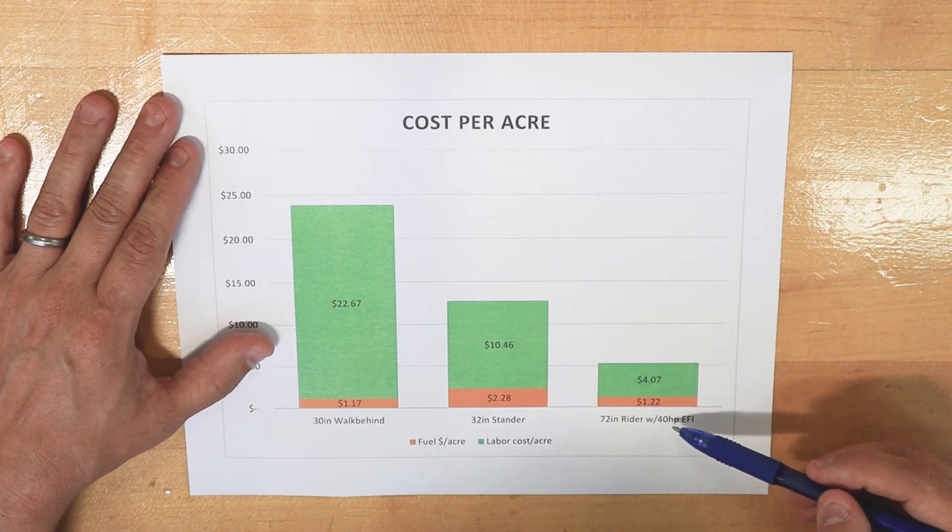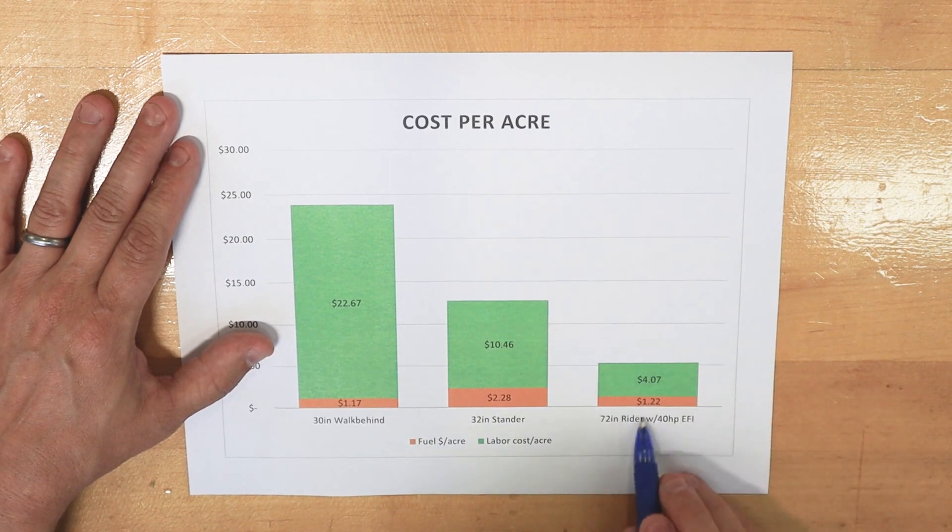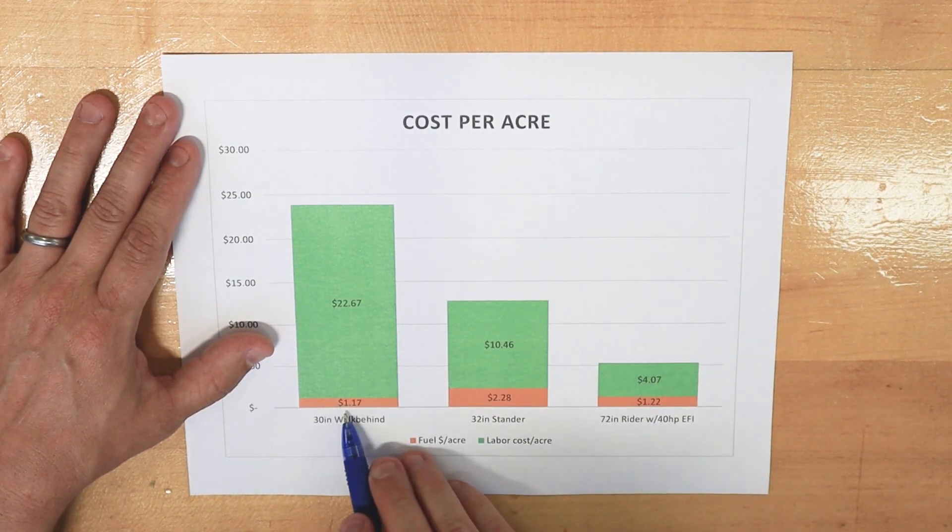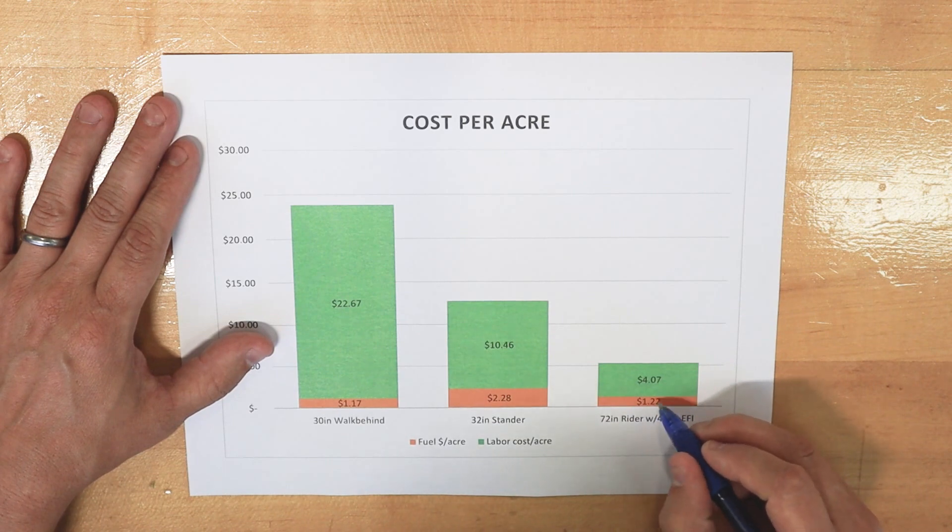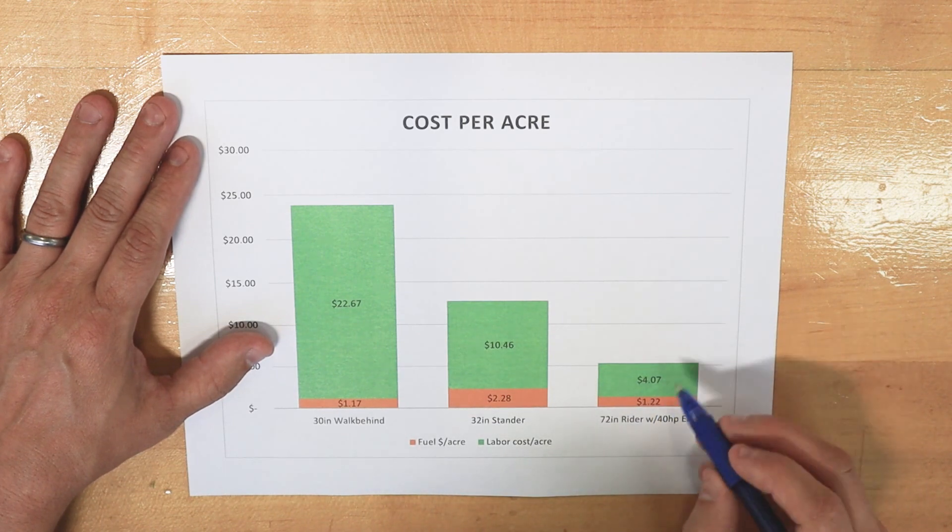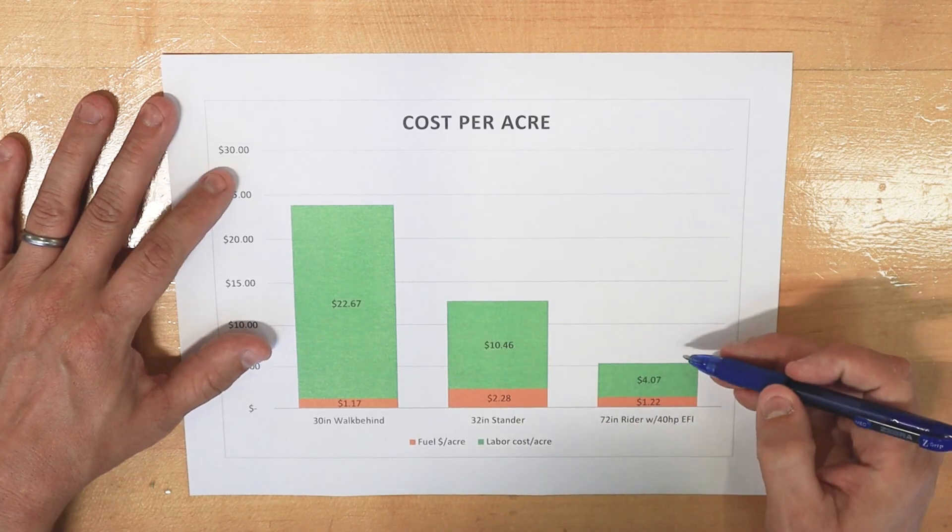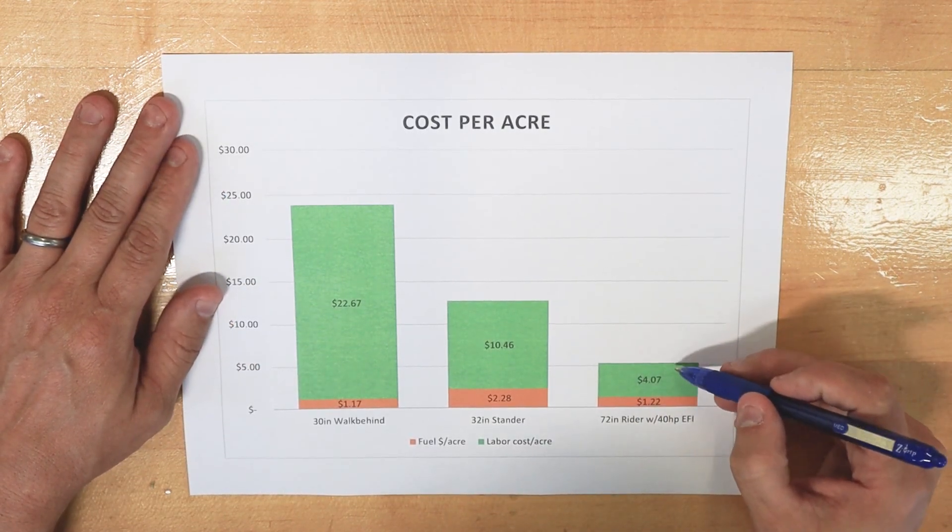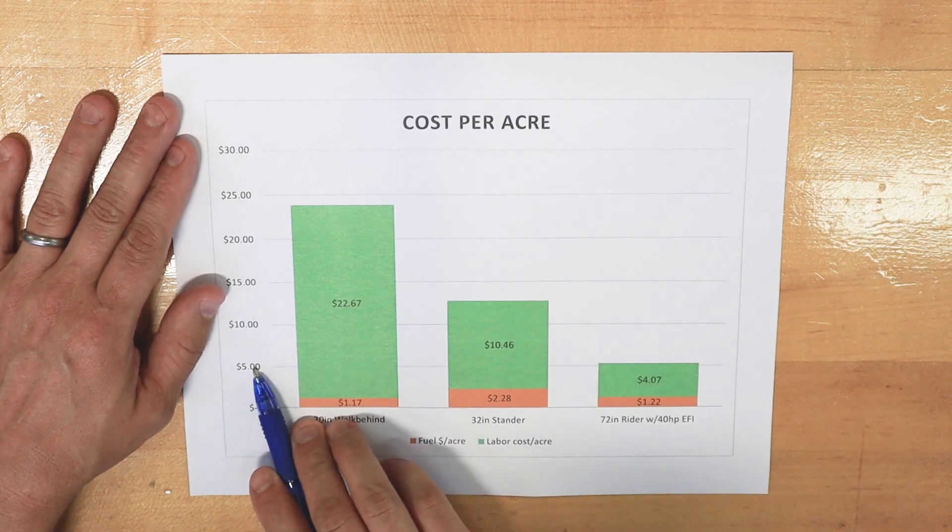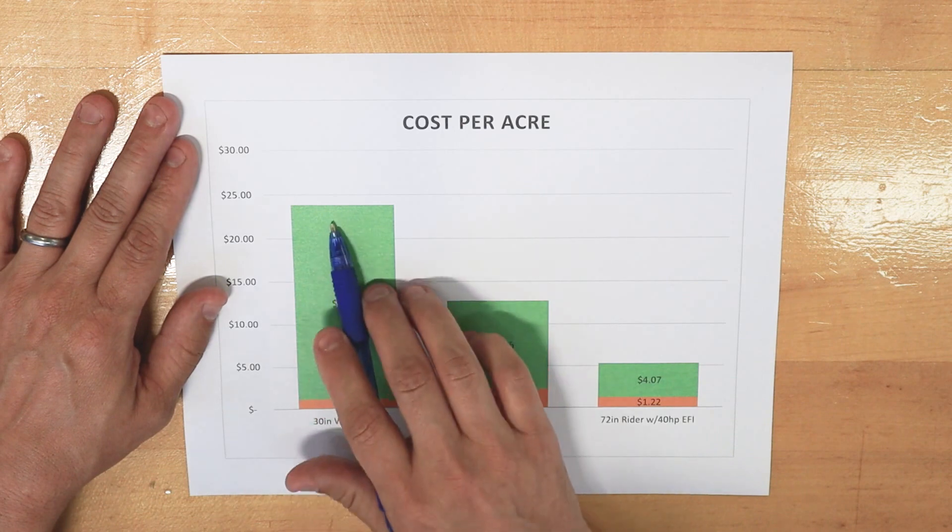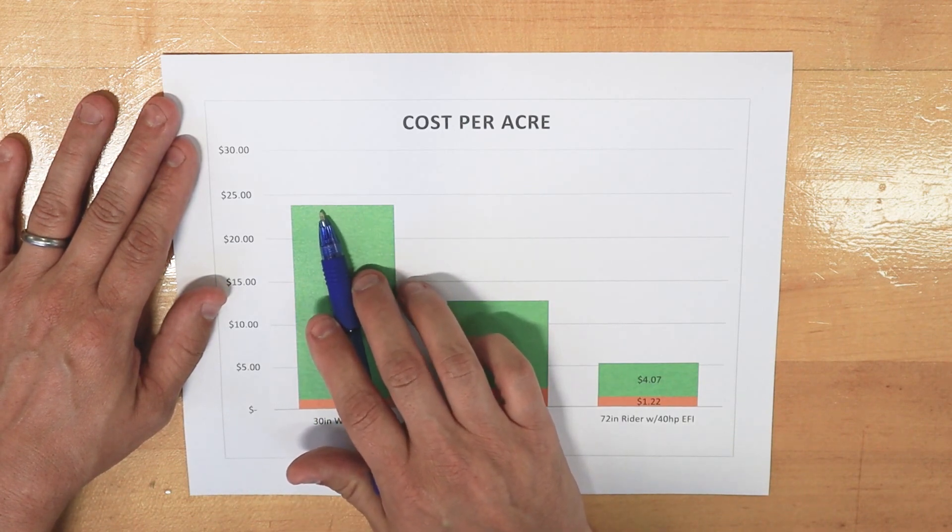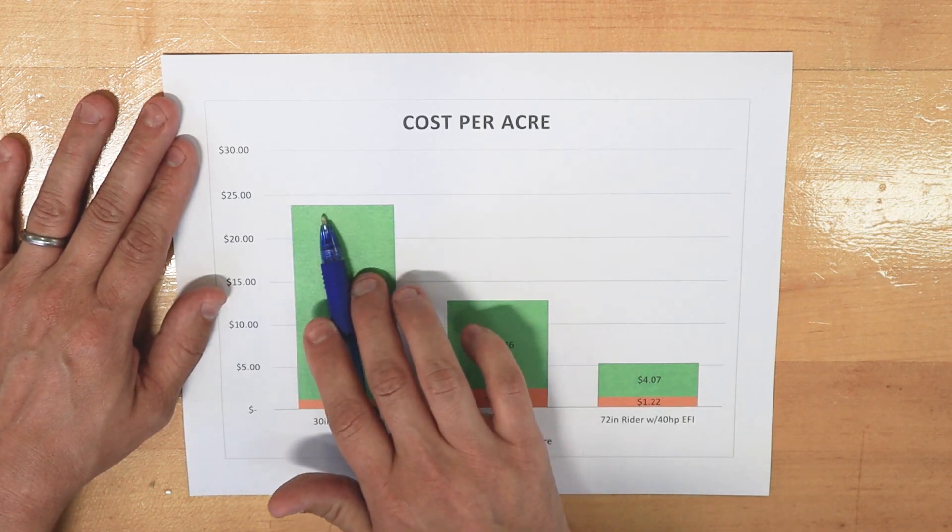Now, when we got to the 72-inch rider, what I'm calling the fire-breathing dragon, note that we only used a couple cents more of fuel to cut an acre, but we did it extremely quickly. So our total cost here per acre is just over $5, whereas with a much smaller machine that was just barely sipping fuel, but sipped it for a long time, we were somewhere up here around $24 an acre.